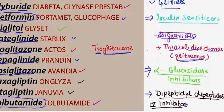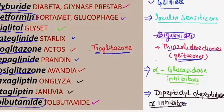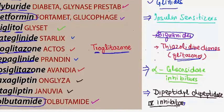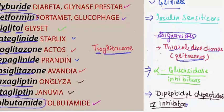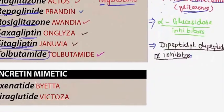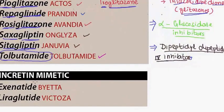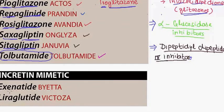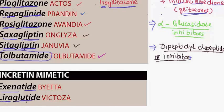And then comes the dipeptidyl peptidase-4 inhibitors. There are two drugs in this category: saxagliptin and sitagliptin. So these were the oral hypoglycemics. Now comes the incretin mimetics, and in the incretin mimetics we have exenatide and dulaglutide.